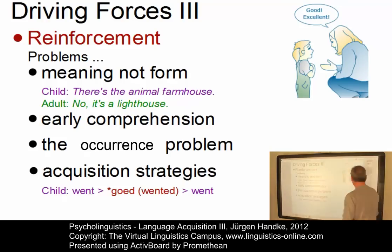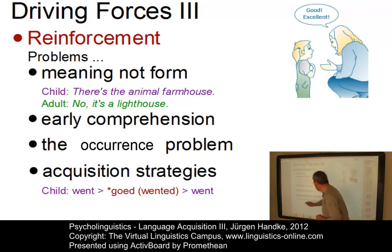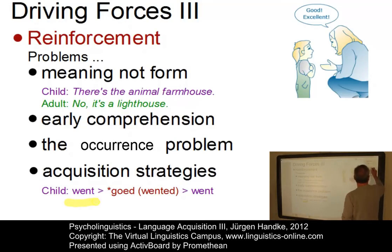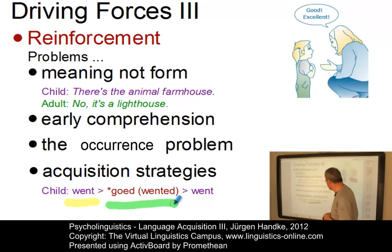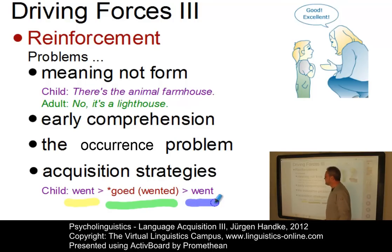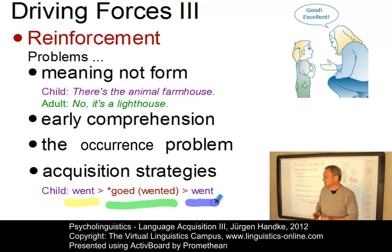Finally, children initially produce correct forms — for example, 'went' for the past tense — then replace the correct irregular form with a regular form not found in adult speech, and later arrive at the final correct form without being reinforced. Since correct forms are reinforced, this intermediate incorrect stage should not happen if reinforcement were the primary mechanism.